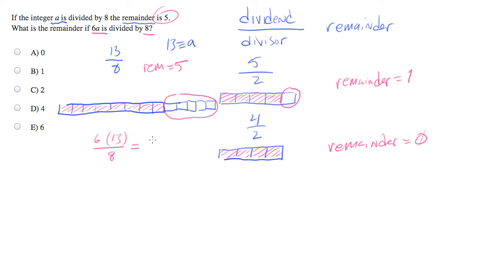6 times 13 is 78. And let's divide that by 8. Well it helps to pick a number close to 78 that we know 8 will go into, because we don't want to draw out 78 boxes. If you plug in 78 over 8 into a calculator, you get 9.75. So let's use the number 9. 9 times 8 is 72.